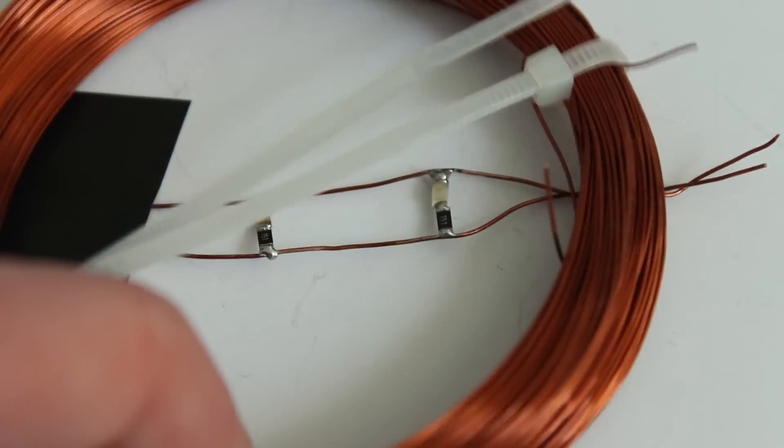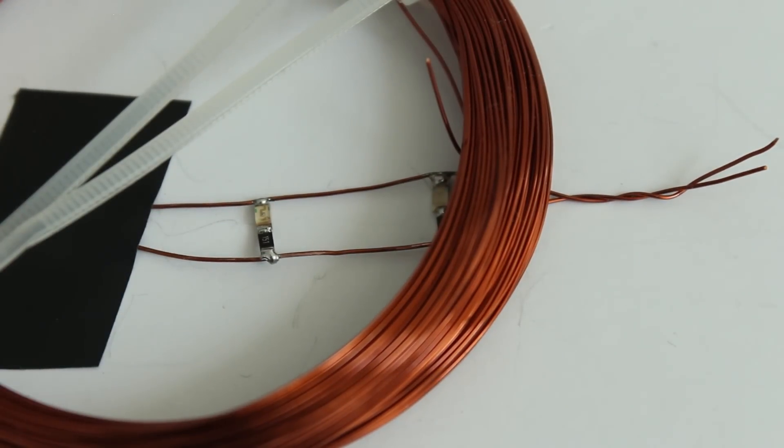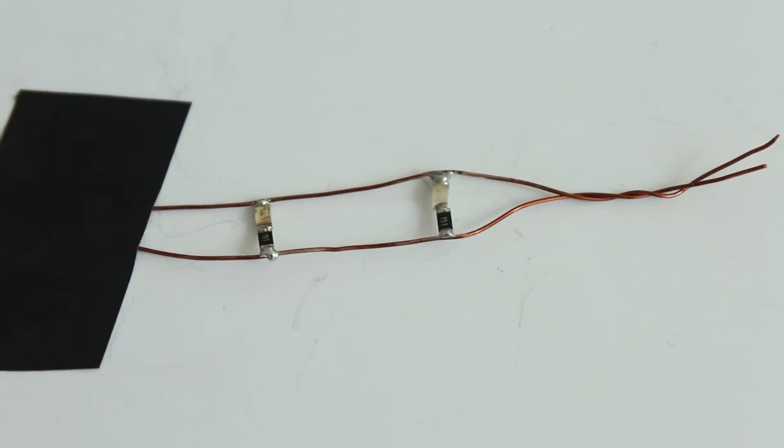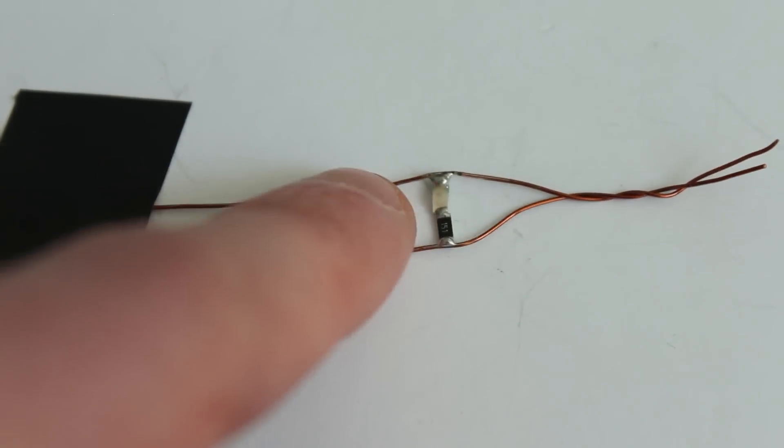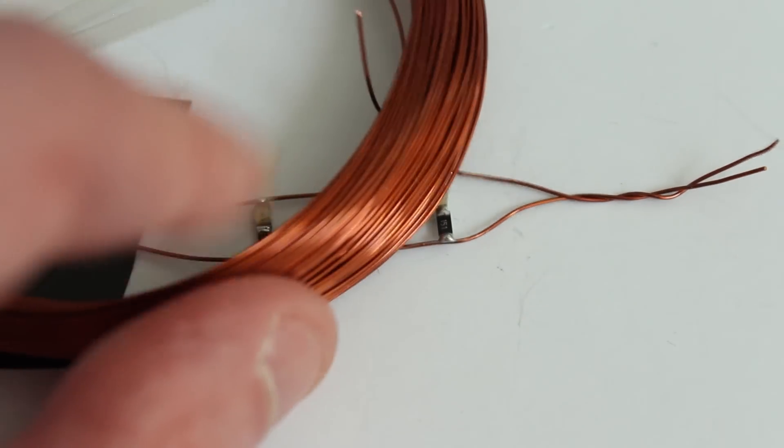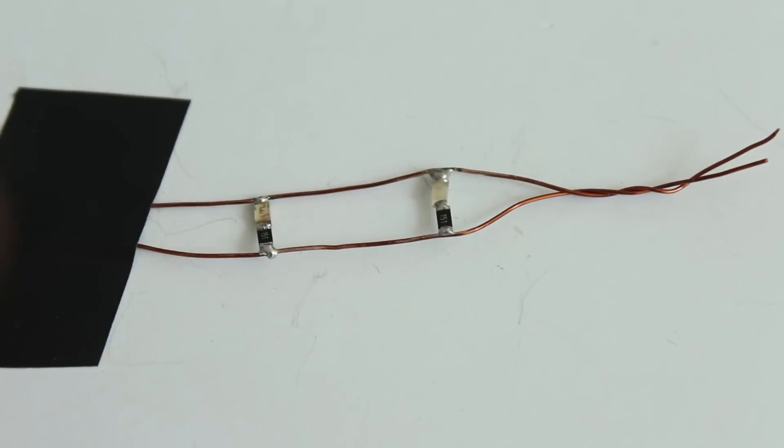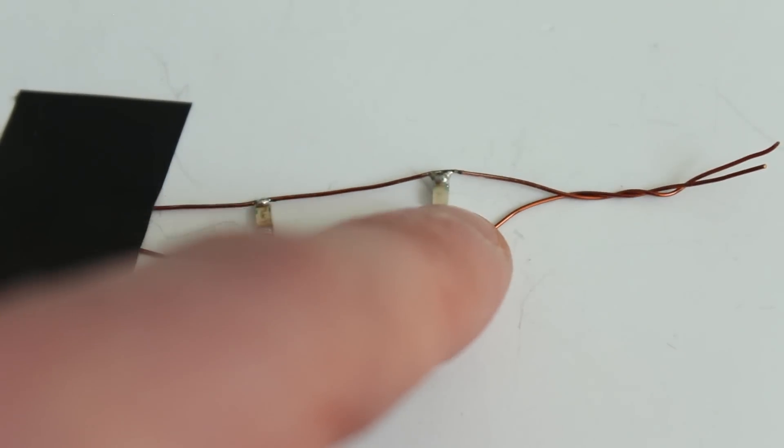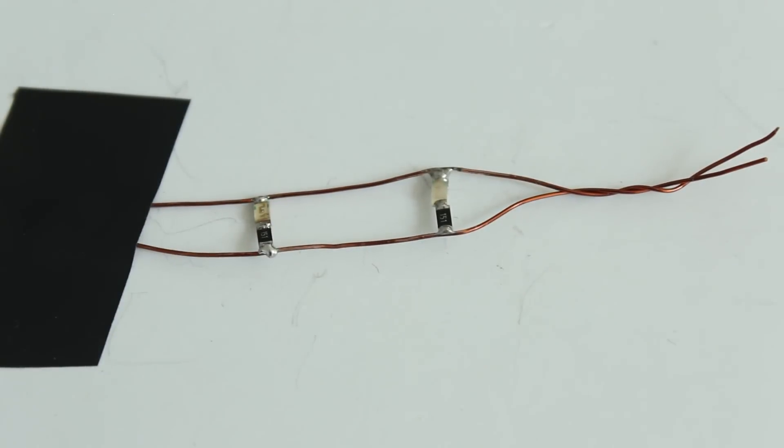It usually comes in a roll like this. You'll find enameled wire in transformers, in electromagnets. And it's enameled on the outside, which means it doesn't create an electrical connection when they're touching, unless you scrape away the enamel, which is what I've done here. I've used a little bit of sandpaper to scrape away an area of the enamel so that I can solder to it.